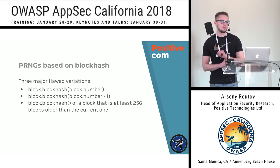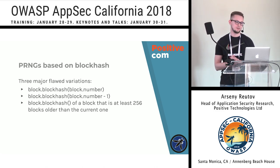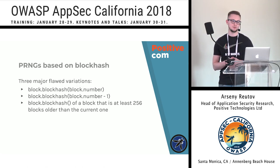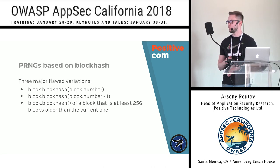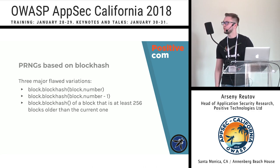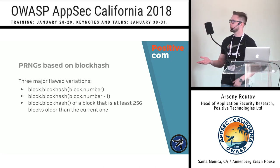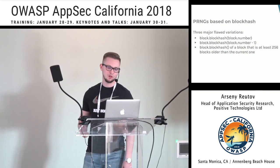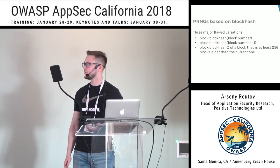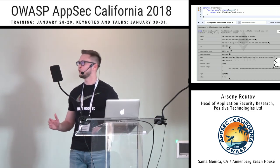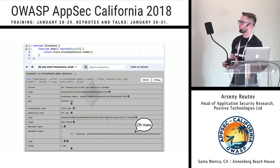The second category of vulnerable generators is those based on block hash. Block hash is a function in EVM that allows you to get the hash of a specified block. There are three common vulnerable variations of misused block hash. The first is getting the block hash of the current block, the second is the block hash of the last block, and the third is getting the block hash of some null block.